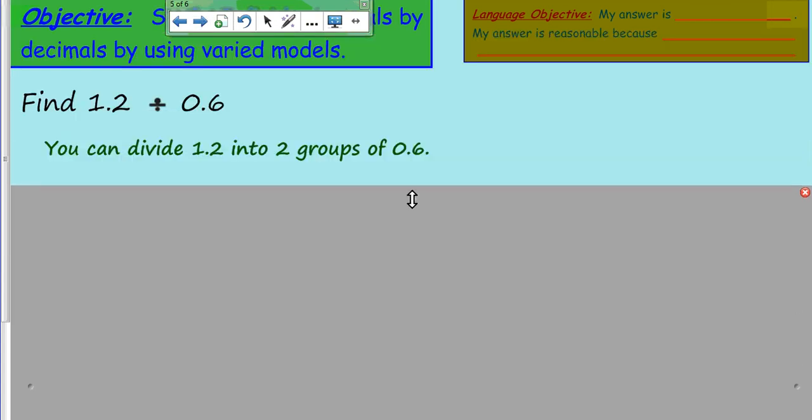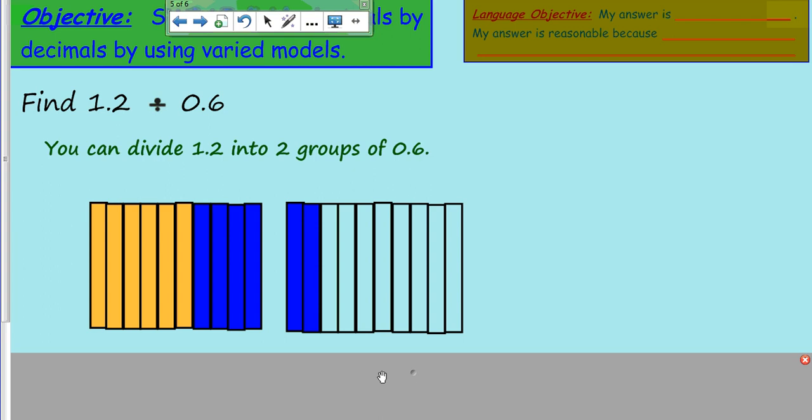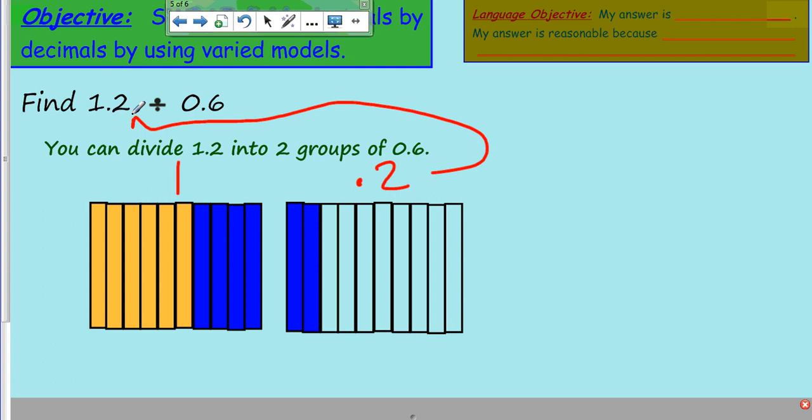Now we have this problem. Find one and two tenths divided by point six. It says here that you can divide one point two into two groups of zero point six. So if we have one point two, here's one whole and this is only point two. Do you see how that represents my dividend? Now to divide it in those groups containing zero point six, you can see that's zero point six, and there's another group of zero point six. You can count them, one, two, three, four, five, six, so there's point six of that one whole. So now I have two groups.